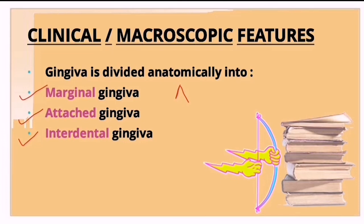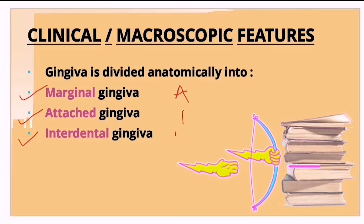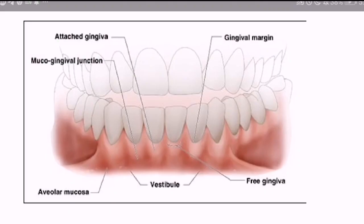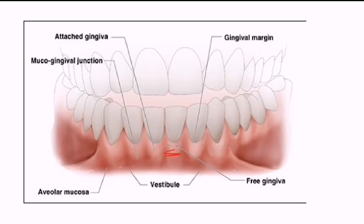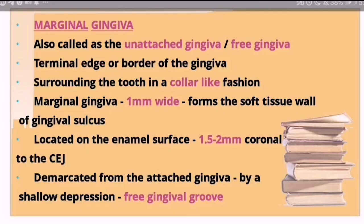You can use the mnemonic AIM to remember: A for attached gingiva, I for interdental gingiva, and M for marginal gingiva. In this picture, the attached gingiva, the pyramidal interdental gingiva, and the marginal gingiva surrounding the tooth in a collar-like fashion are all visible.